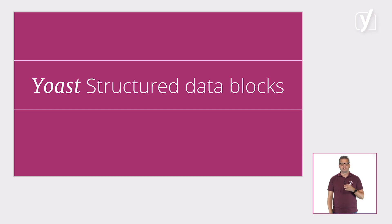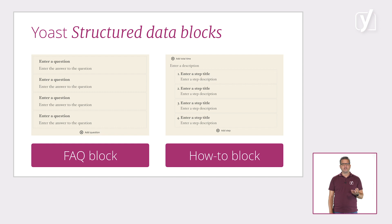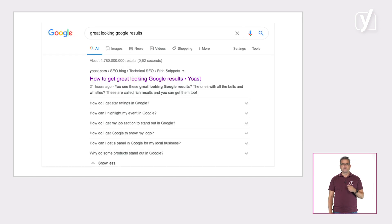Finally, we have the Yoast structured data blocks. With the blocks, you can create pages that contain specific types of structured data, such as FAQ or how-to. Using them will increase your chances to qualify for rich results. So if you use the FAQ block, for example, you may see your results appear like this.